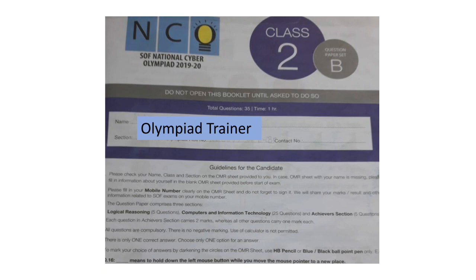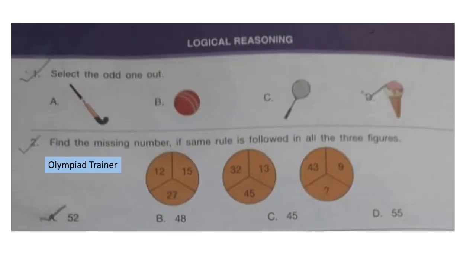Let's start with the first section, Logical Reasoning. Question 1: Select the odd one out. Look at the options here — A, B, C. All three options are related to sports, but D is ice cream, which is the odd one. So the correct answer is option B.